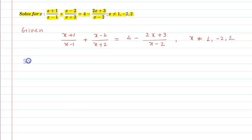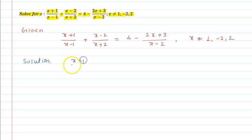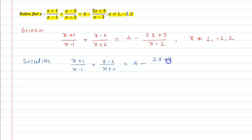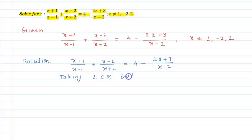Let us see the solution part of this question. We have both sides, and we will take LCM on both sides. On the left hand side, we have x plus 1 upon x minus 1, plus x minus 2 upon x plus 2, equal to 4 minus 2x plus 3 divided by x minus 2. Taking LCM on both sides.